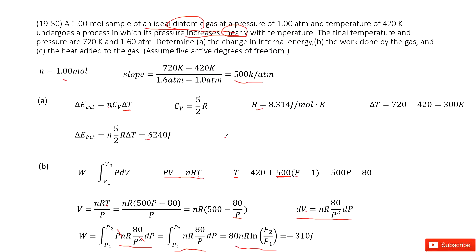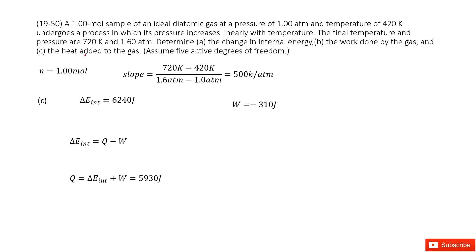The next one asks you to find the heat added to the gas. So there we can consider the internal energy changes equal to Q minus W, minus work. And internal energy changes is given there. The work done is given from the previous question b. So in this case, you can get the function for Q as internal energy changes plus the work. Input these two numbers inside and you get the answer: 5930 joules.